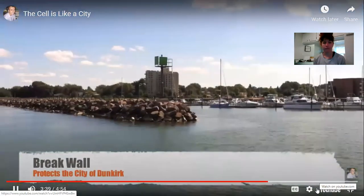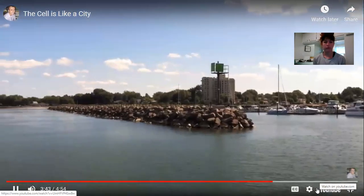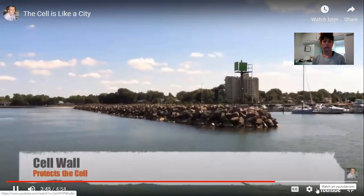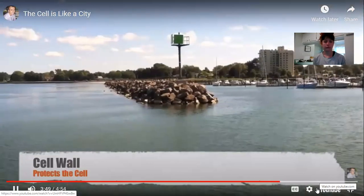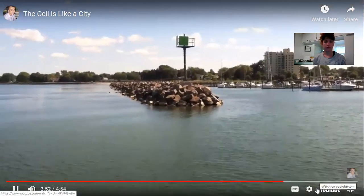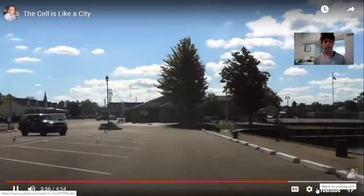The city's break wall is a layer of rocks that prevent the waves from eroding our shore. We can compare the city's break wall to a cell's cell wall because both protect the things inside of them. The cell wall is a rigid layer of non-living material that surrounds the cell and helps protect what's inside.